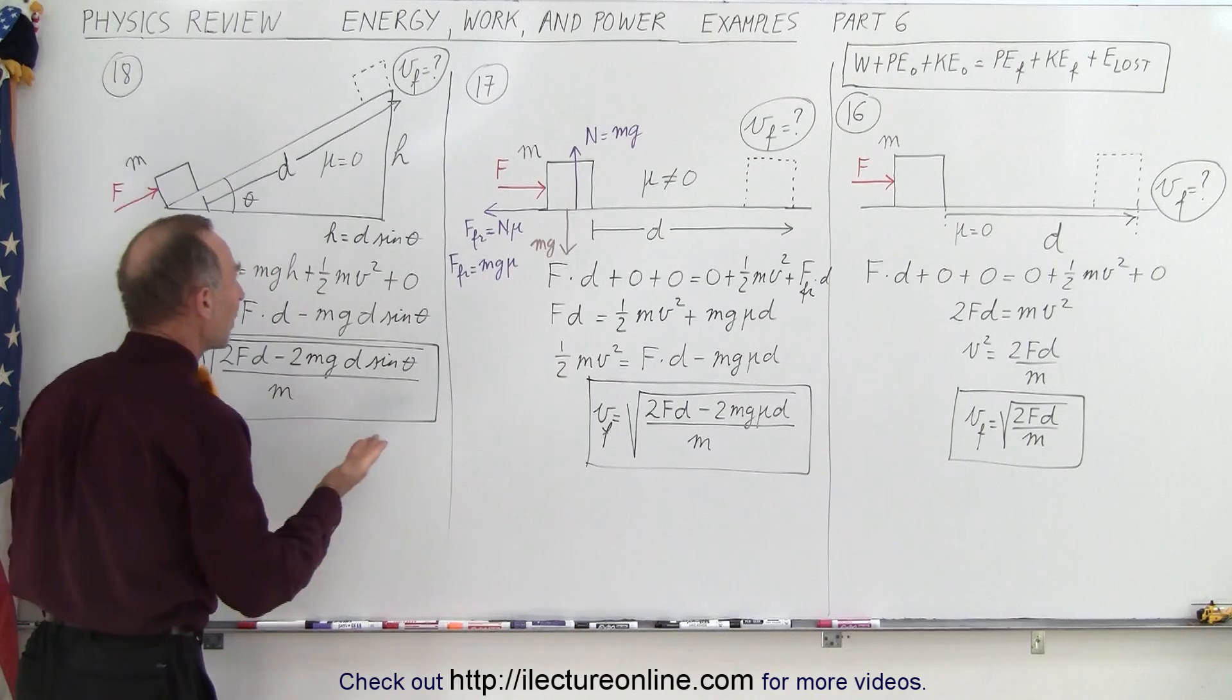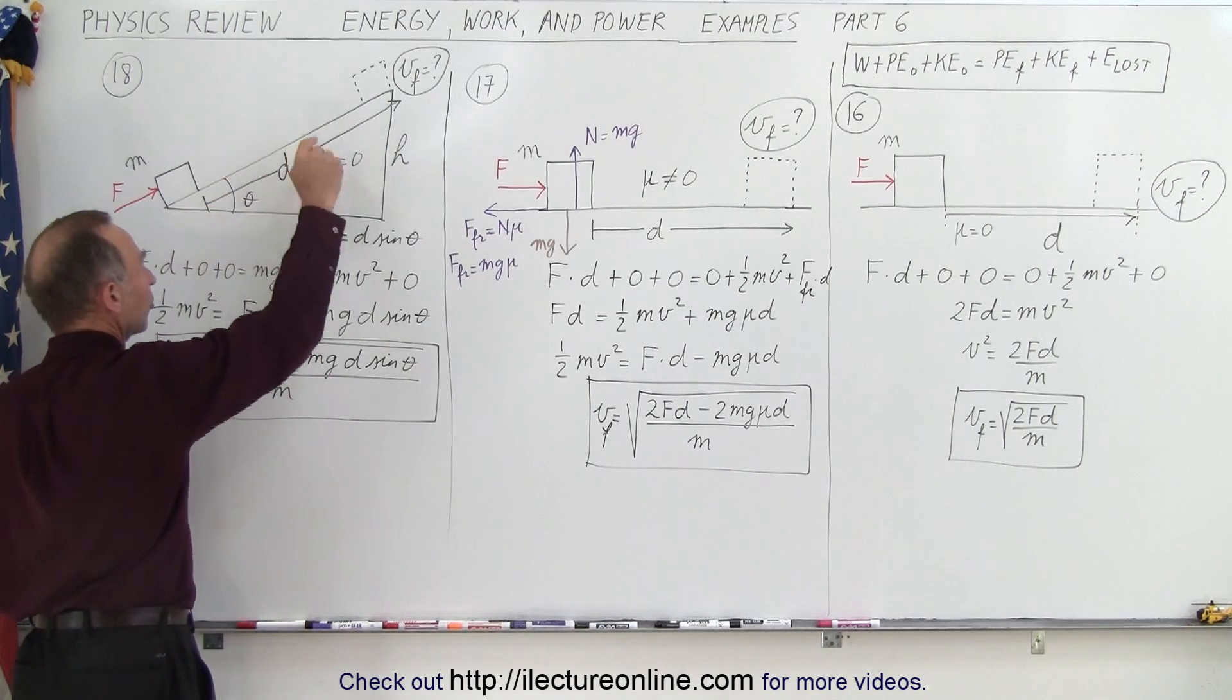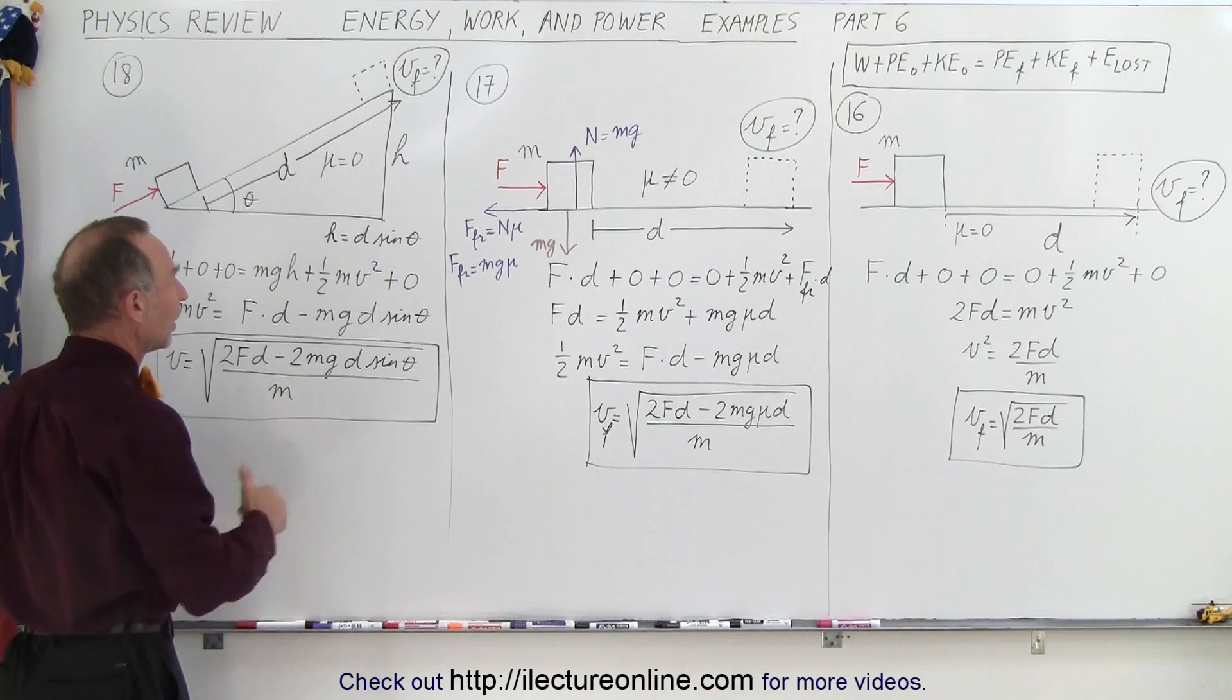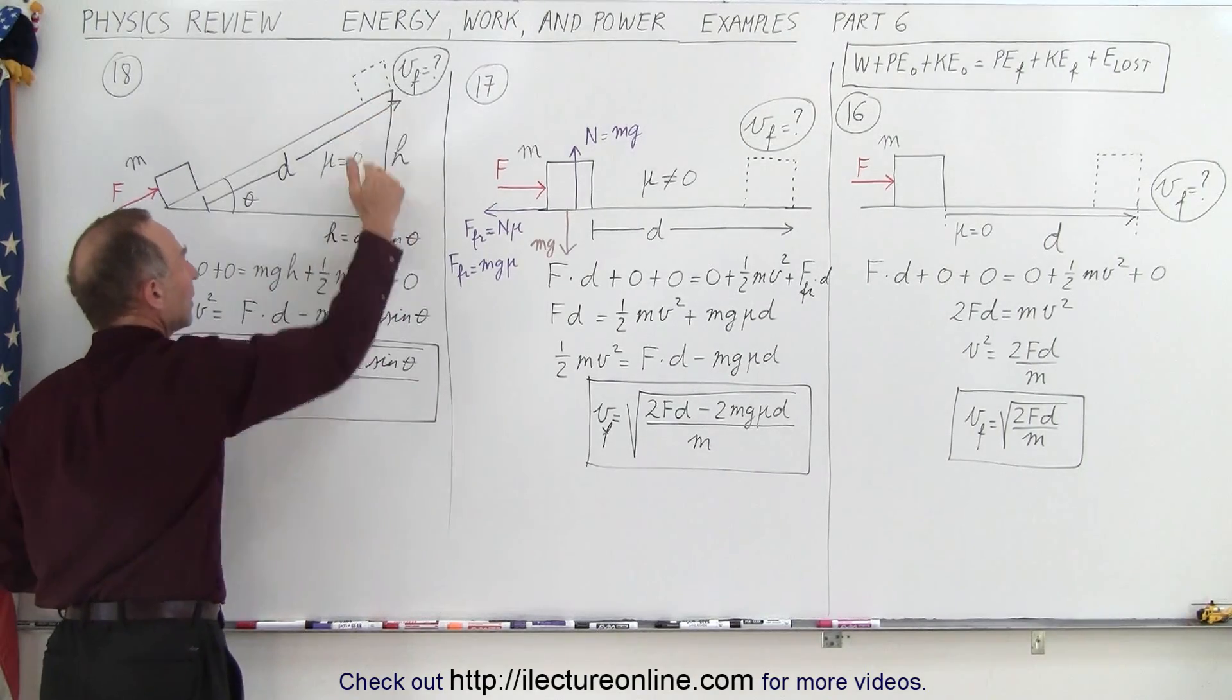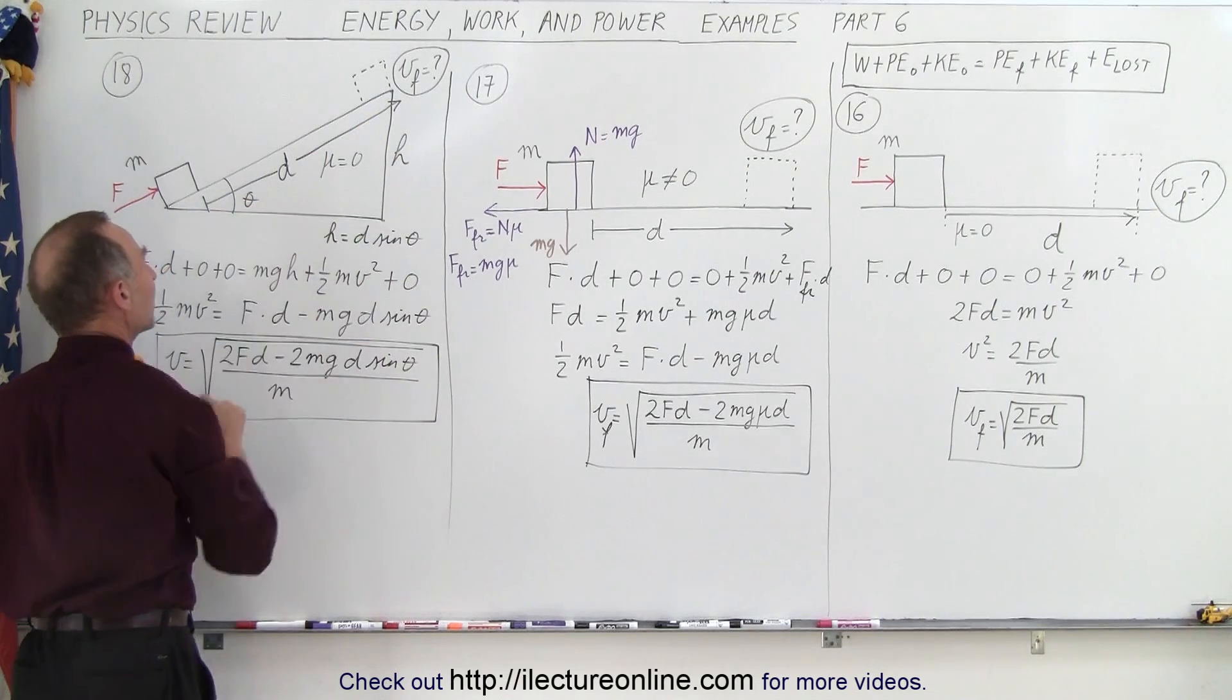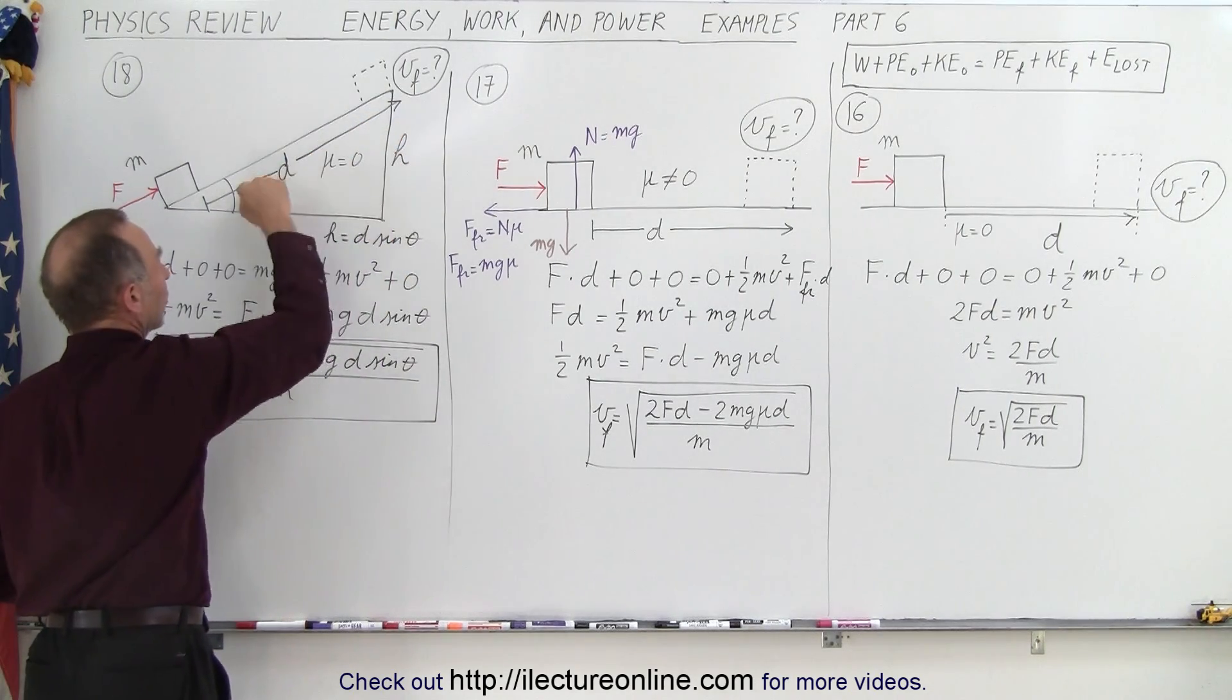Over here we have an example now where we actually push an object up a slope. Again, let's start out by mu being equal to 0. So now we know that we gain some height, and the height can be calculated to be the distance traveled d times the sine of the angle theta, because h is opposite to the angle.